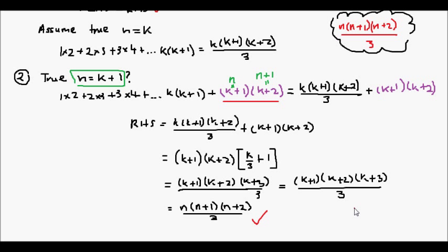Hence we have used induction to prove that 1 times 2 plus 2 times 3 plus 3 times 4, and so on and so forth, to n times n plus 1, is definitely equal to n times n plus 1 times n plus 2, all over 3, for all positive integers. I hope this video has helped you better understand how to use mathematical induction.